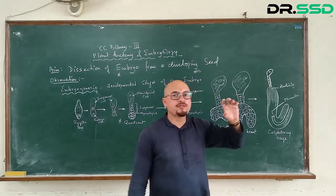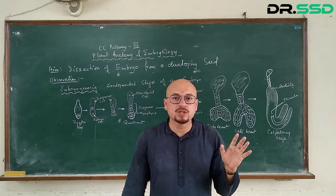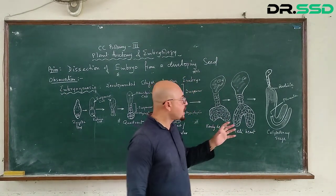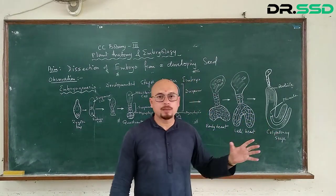Now this is the haustorial cell which has become very, very small. It is going to die because already the seed is now extremely matured.